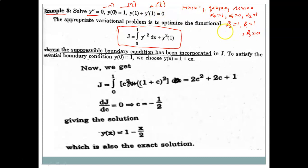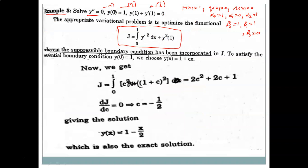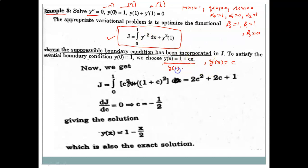Substituting all parameter values into the standard equation 5 gives the functional J for this example. The essential boundary condition is y(0) = 1, so we choose the approximate solution y(x) = 1 + cx. Putting x = 0 gives y(0) = 1, satisfying the essential condition. From this choice, y'(x) = c.